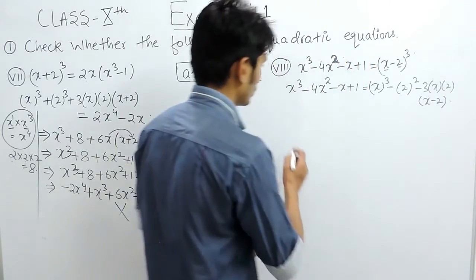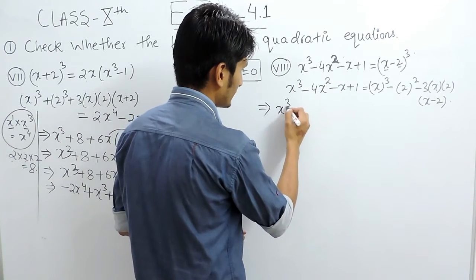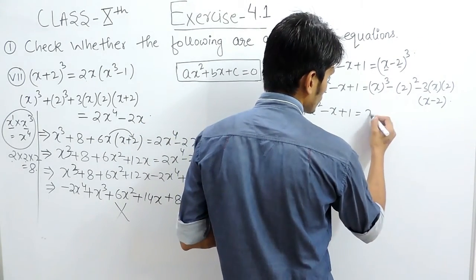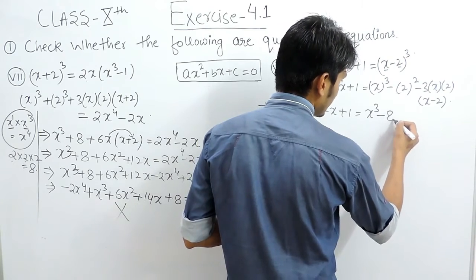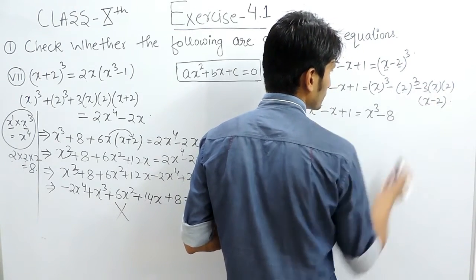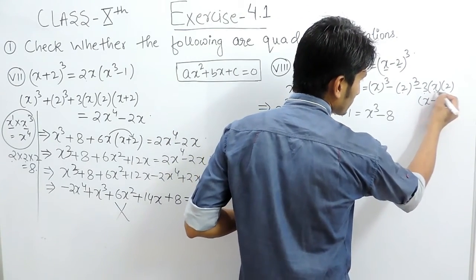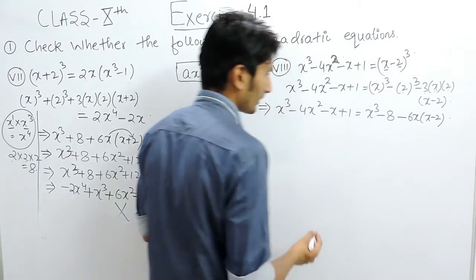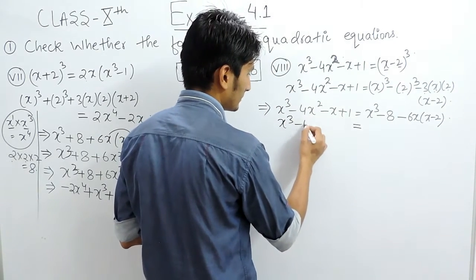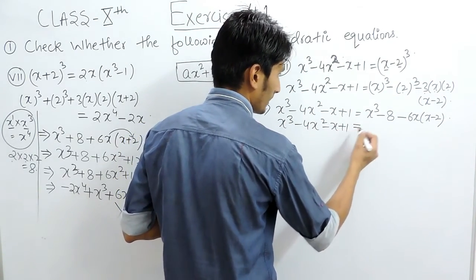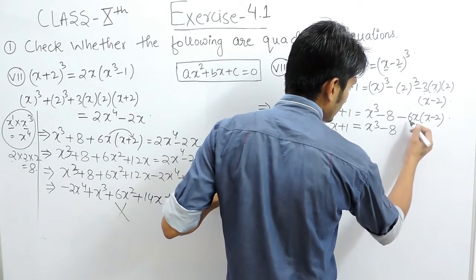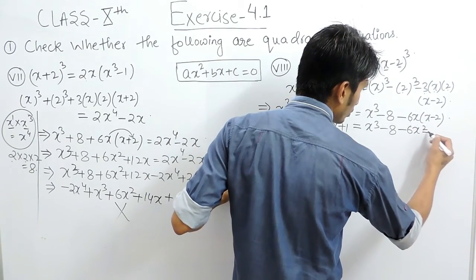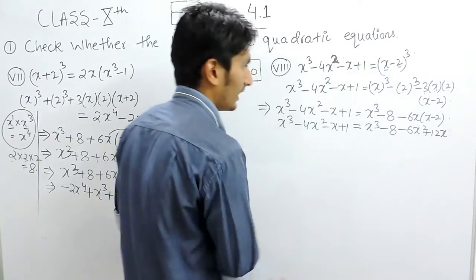This is actually multiplication with this term. Solving the left hand side, this term will remain as it is. On the right hand side, further solving: this is x cube, this is x cube, this is minus 8 — because 2 cube is 8 — and 3 multiplied by x multiplied by 2 is basically 6x multiplied by (x minus 2). Further solving: this will become x cube minus 8, and this when multiplied by x will become minus 6x square, and 6x multiplied by 2 will become 12x.